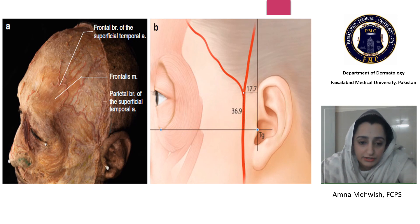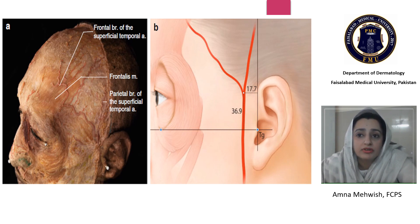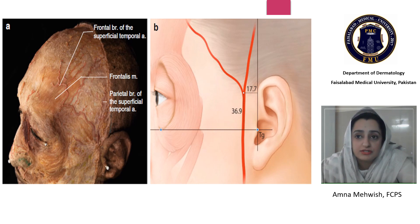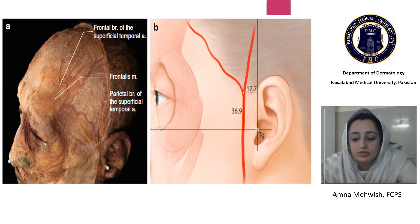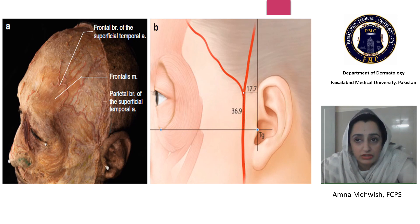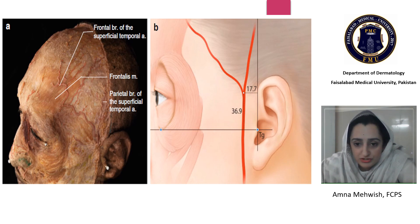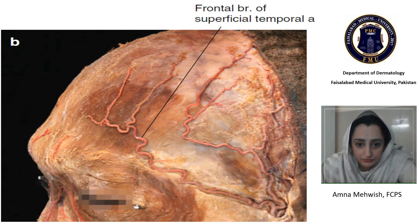In the temple area, it is important to know not just which structures are present, but also the communication between them. The internal and external carotid arteries communicate with each other, so even if you inject in the temple, it communicates with the zygomaticotemporal artery — a branch of the internal carotid — and can lead to embolism inside the eye via the ophthalmic artery. The preauricular area is the fixed point for the superficial temporal artery.